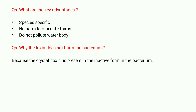Moving on, one of the major questions is: what are the key advantages of using BT toxin over other methods? First, it is species specific — it is going to affect a particular species only. For example, if it is effective against bollworm, it is only going to target the bollworm and not affect any other insect.